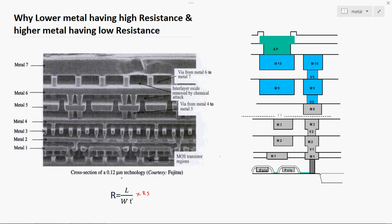Any metal — gold, copper, aluminium, or any other metal — has these three parameters: length, width, and thickness, along with sheet resistance Rs. I have a separate video explaining Rs in detail; you can watch that and come back to this video to better understand the concept.